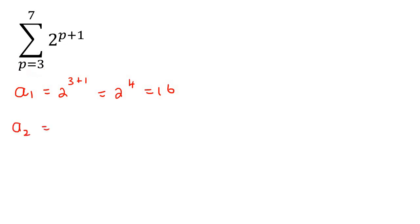To find term number two, you just add one to this number. So now we're going to be plugging in a four for P. And that's going to be 32. To find term number three, we're going to use a five for P. And you keep going until P reaches seven.